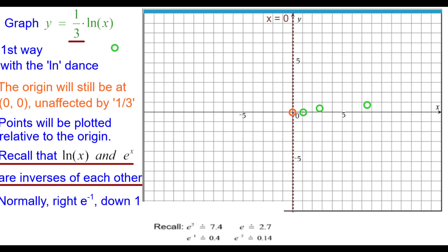Normally e to the negative one down one, and the reciprocal of e is 0.4, so we'll go 0.4 down one-third because of that third factor, and right e to the negative two down two becomes right e to the negative two, which is about 0.14, and down only two-thirds.